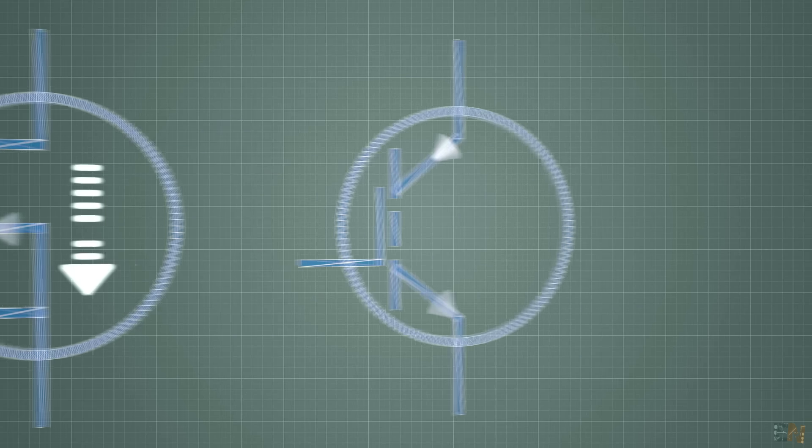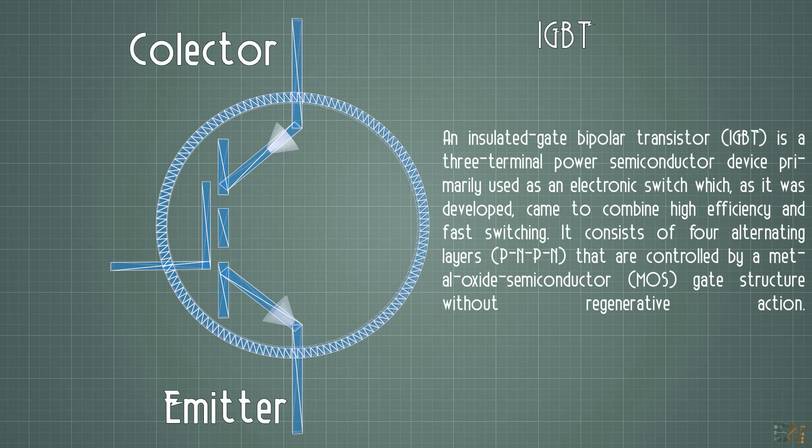The IGBT is a mix between these two and it has the emitter and the collector as the BJT but it is controlled by a signal applied to the gate, as the MOSFET does.